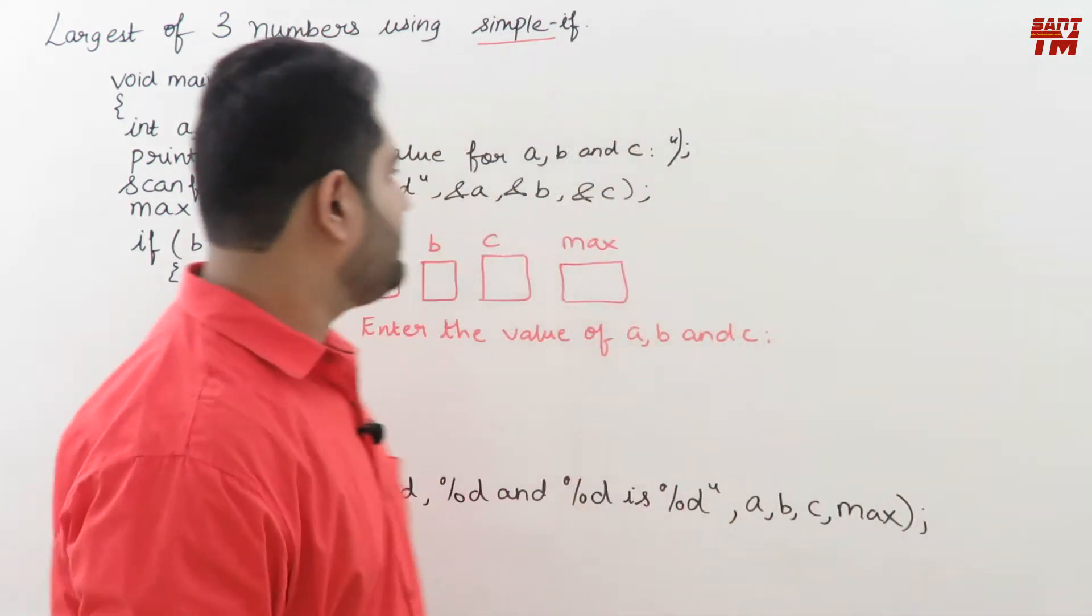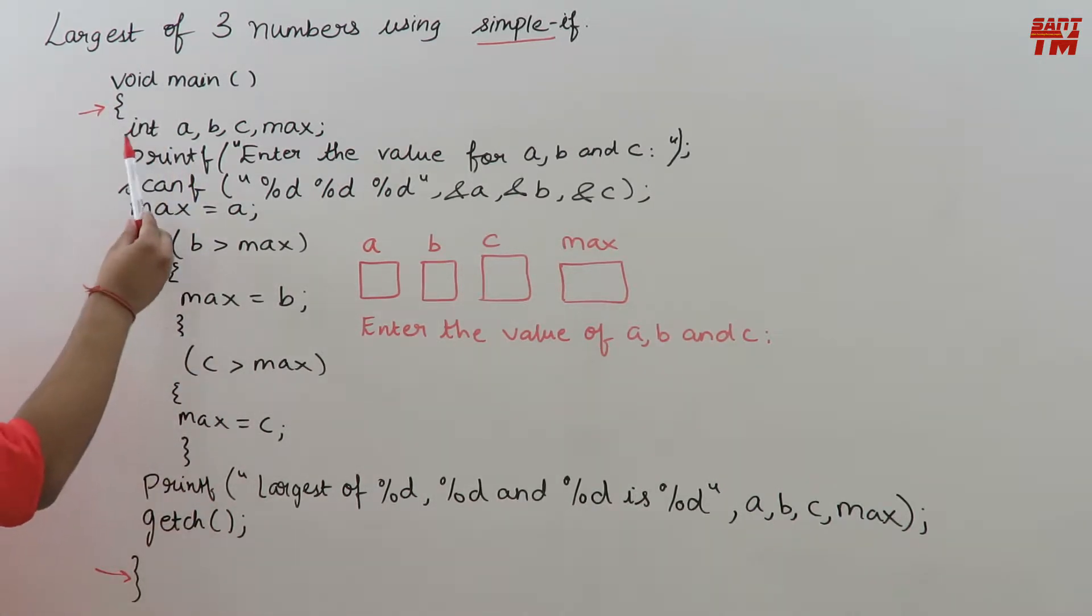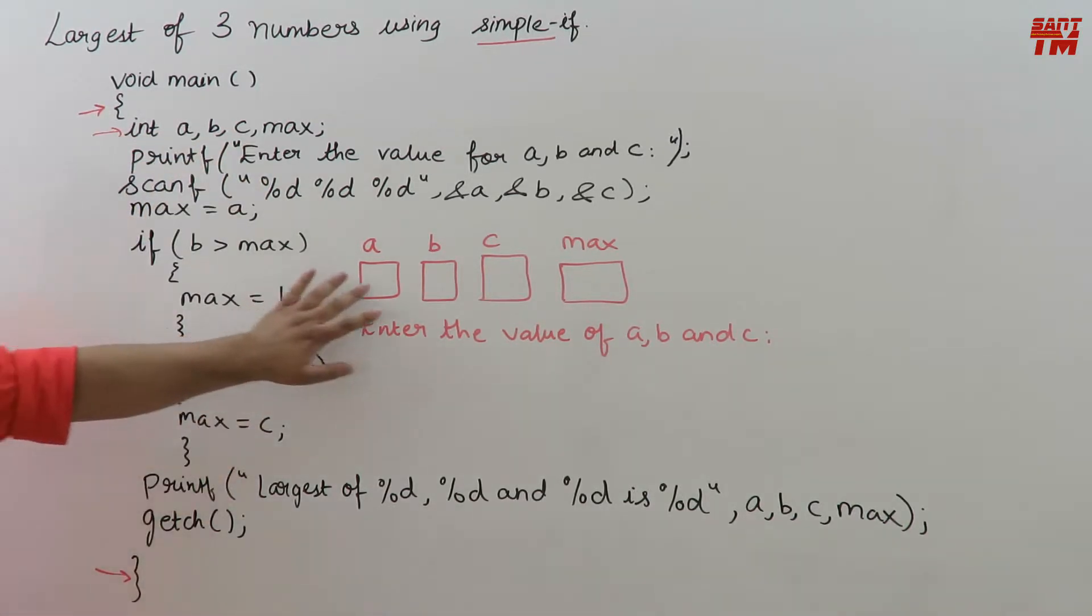Come on let's begin it. Suppose here the main function starts and here it ends, you can include the necessary header files while executing it. So in the first statement I have taken four variables integer type a, b, c, max. So like this the memory will be allocated and all these memory locations will hold integers.